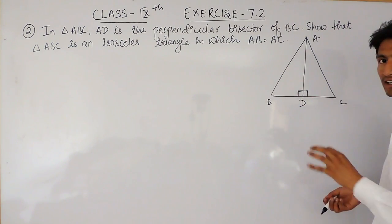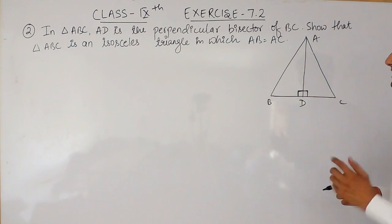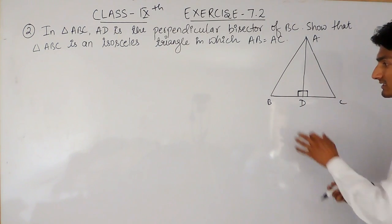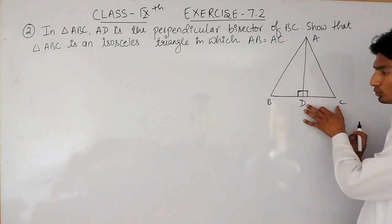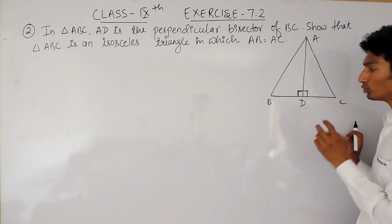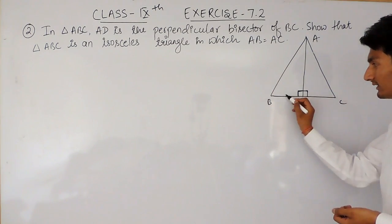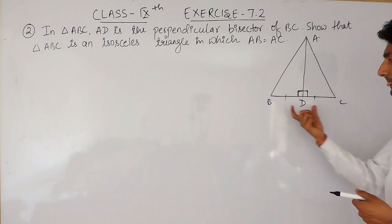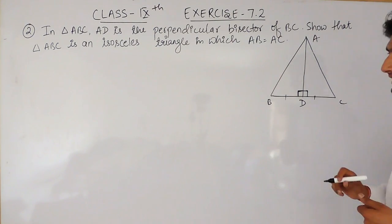So these two angles must be of 90 degrees each. And what does bisector mean? This AD must divide this line into two equal parts. Bisecting means dividing something into two equal parts. So this side and this side must also be equal. The length of BD must be equal to the length of DC.